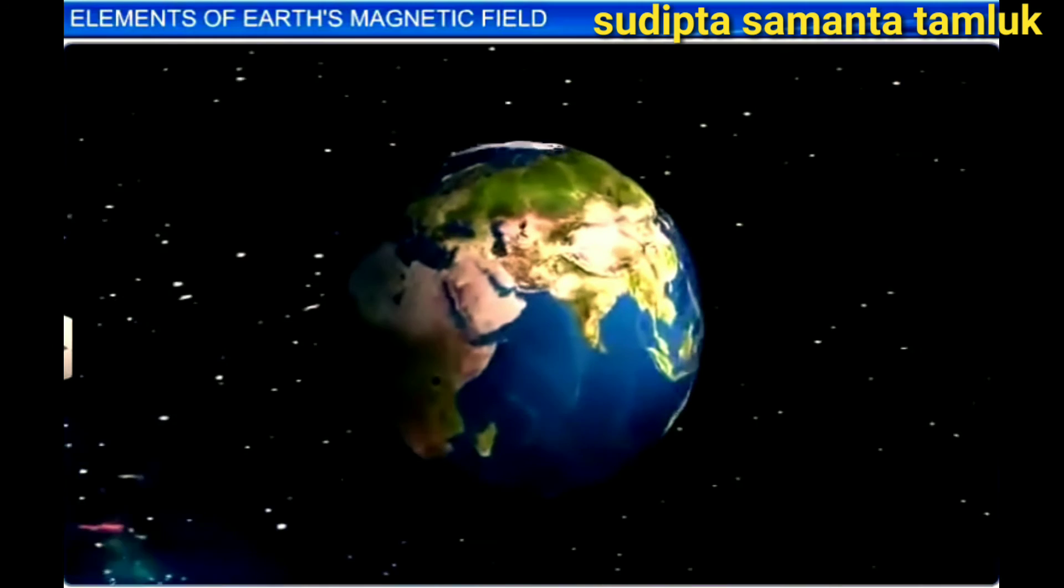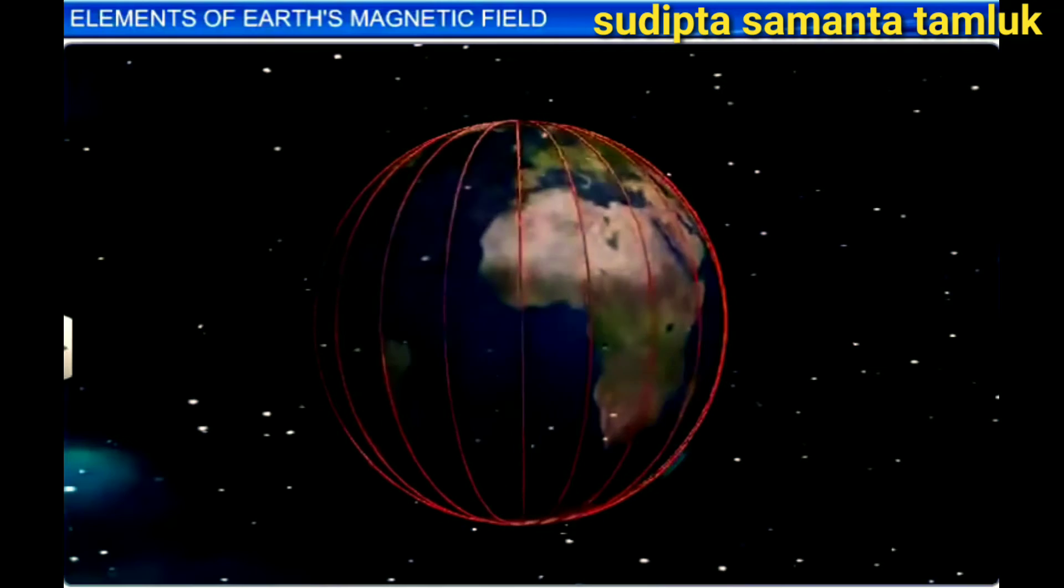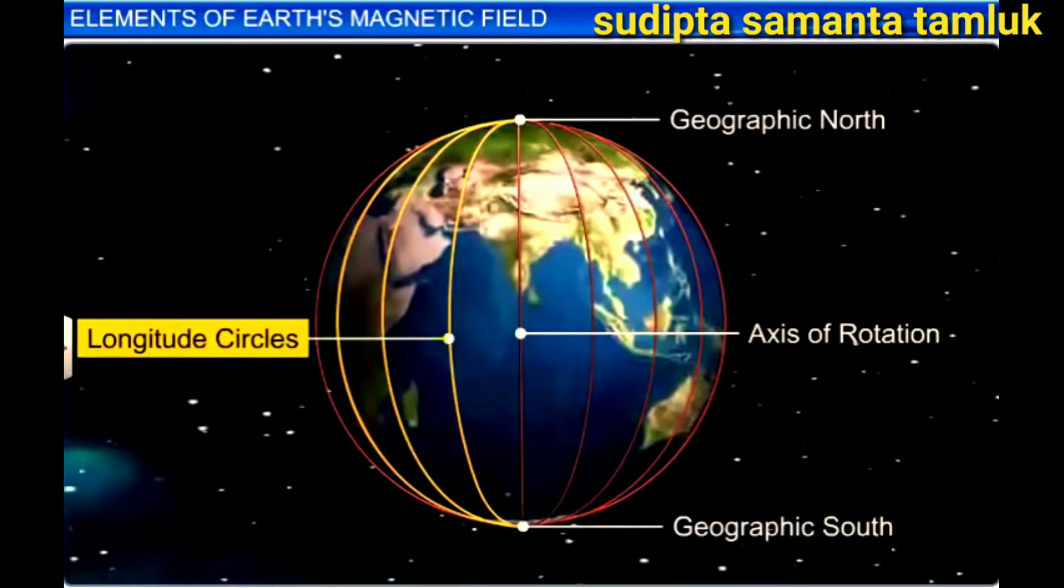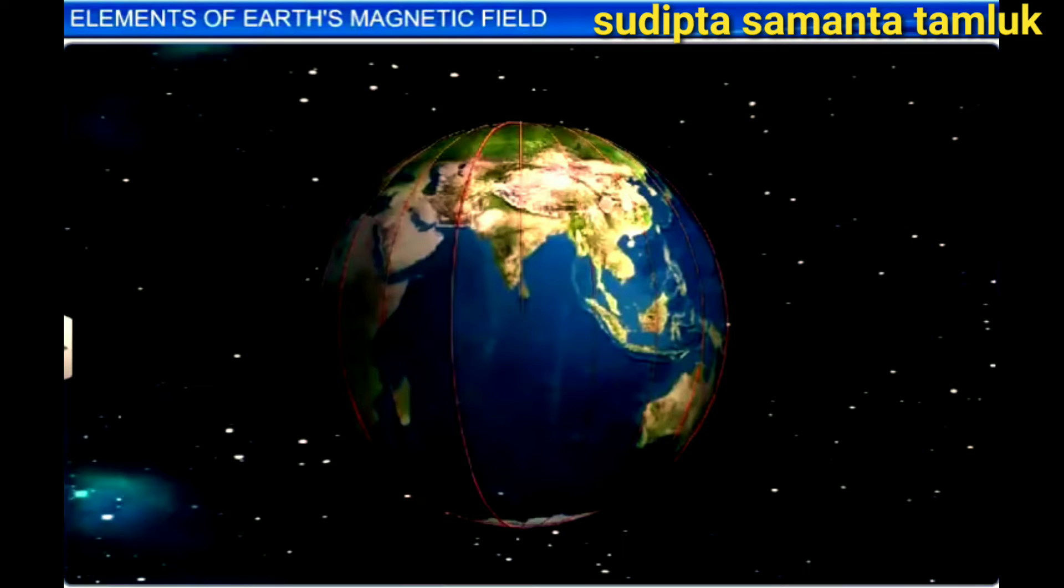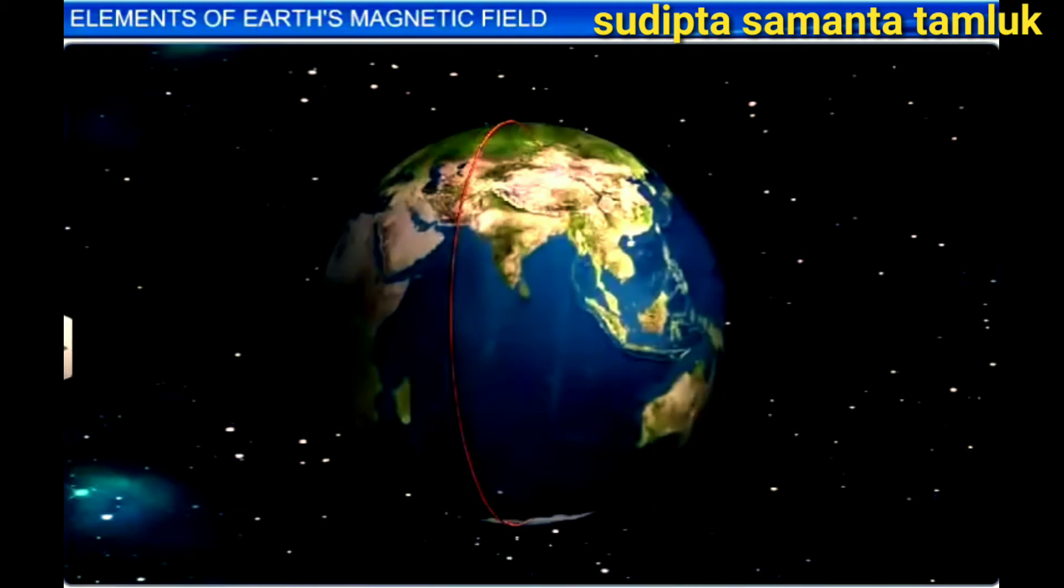We all know that the Earth is spherical in shape. On this spherical surface, we can draw an infinite number of imaginary circles passing through the Earth's geographical north and south poles. All these circles have one common diameter, which is the line joining the geographical north and south poles or the Earth's axis of rotation. These imaginary circles are called longitudes. Each of these circles, along with the Earth's axis of rotation, can be drawn in one plane. This plane is called the geographic meridian.